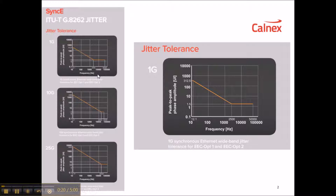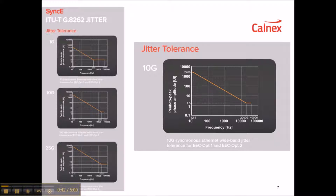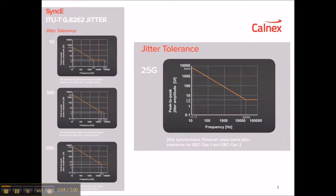The masks here show the SyncE Jitter tolerance masks. These are the pass-fail masks for controlled values of Jitter applied by the test equipment. There are different masks for each SyncE rate and the plotted results must be above the mask. The first mask is for 1GbE covering a frequency range of 10Hz to 50kHz, with amplitude starting at 312.5 UI and finishing at 1.5 UI peak-to-peak at 50kHz. The second mask is for 10GbE interfaces covering 10Hz to 40kHz, starting at 2488 UI and finishing at 1.5 UI at 40kHz. The third mask is for 25GbE interfaces covering 10Hz to 100kHz, starting at 6445 UI and finishing at 3.6 UI peak-to-peak at 100kHz.